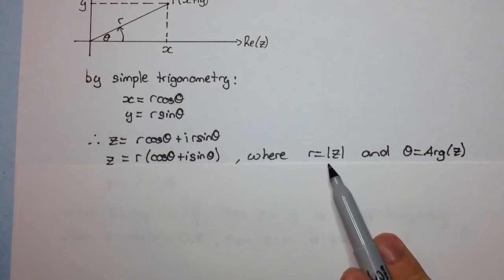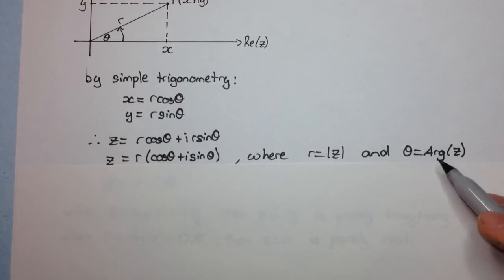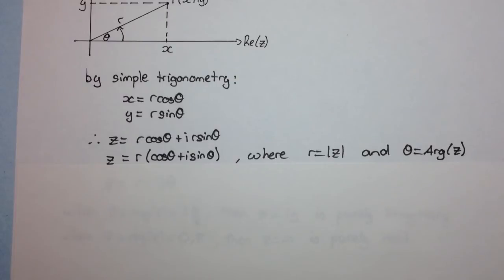And again, you can write it as the modulus of z in this form, so that's just notation. And theta is the argument, or the principal argument. So when you see a capital A, that means it's the principal argument of z. If it's just a lowercase a, then it's just any angle, right? And remember, the principal argument is in between minus pi and pi.